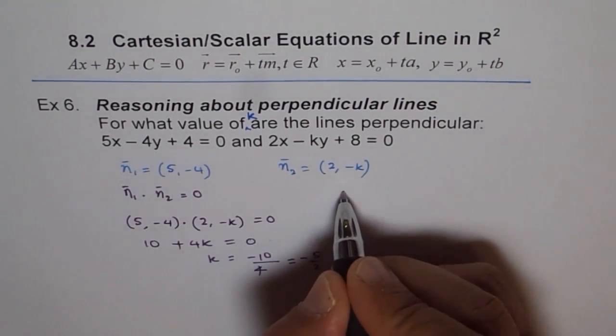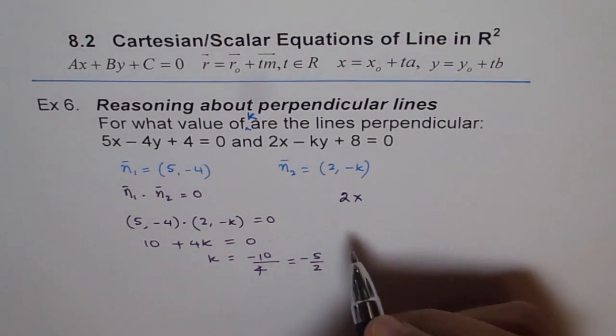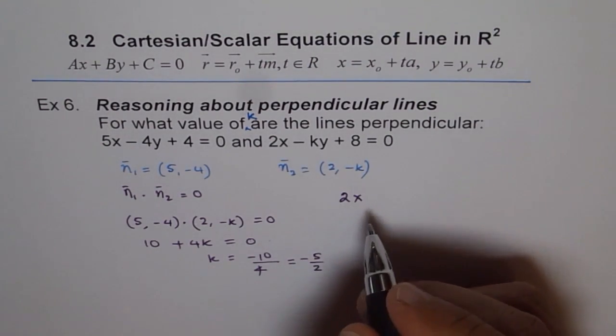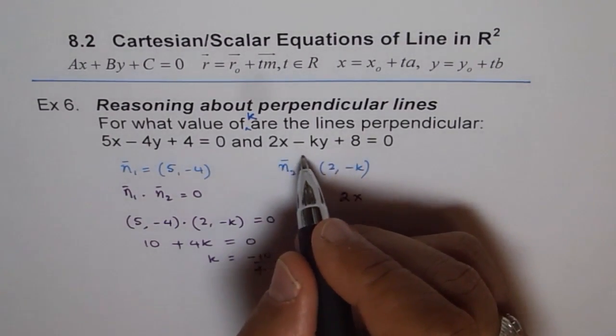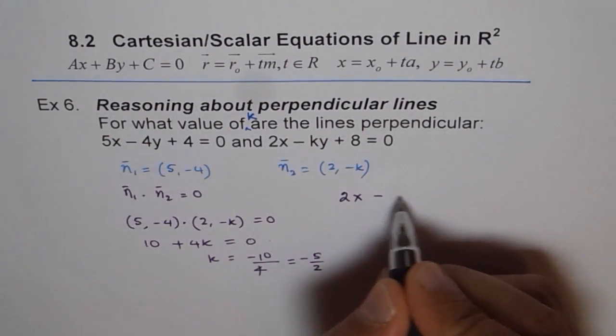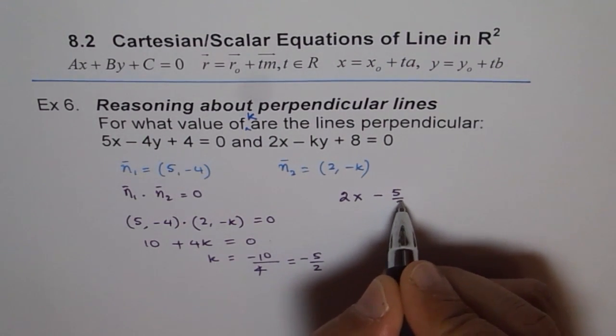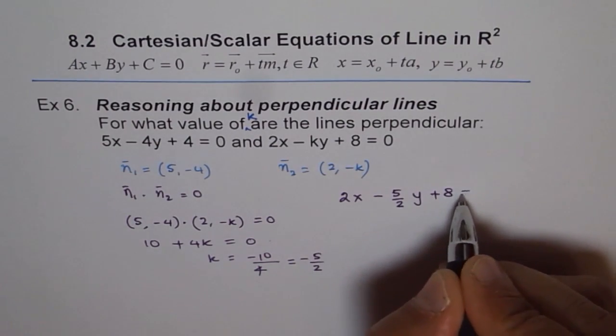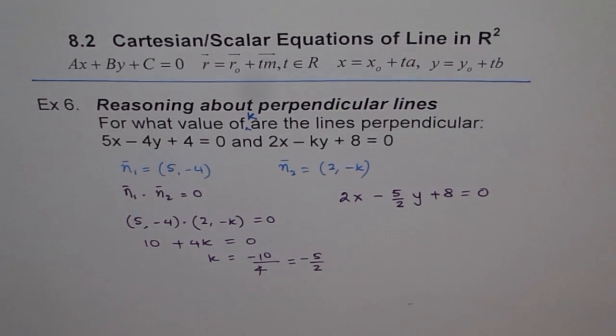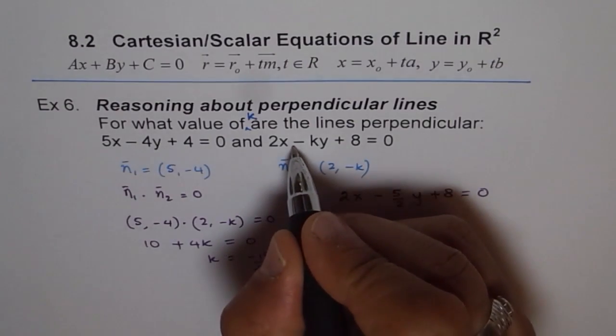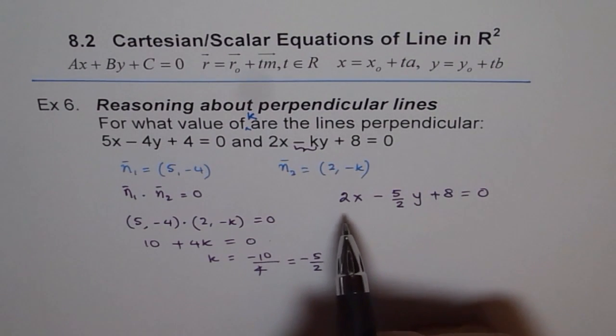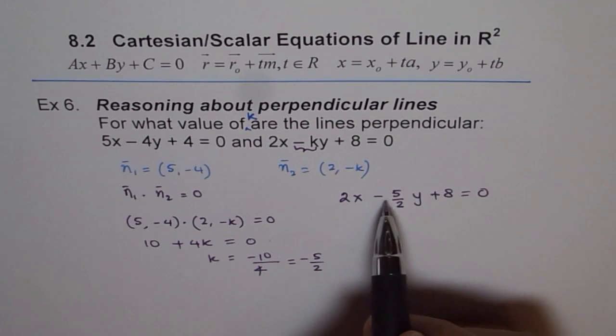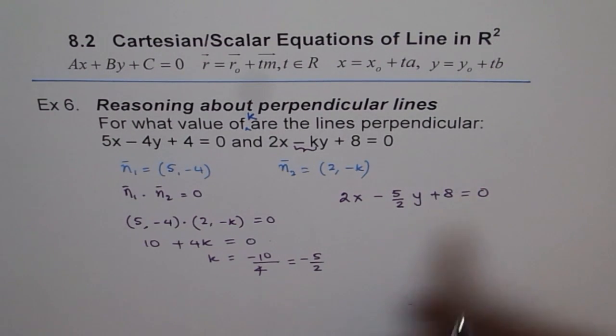And therefore, the equation will be 2x and k is minus 5 over 2. So we are replacing minus k here. So we are separating this as minus 5 over 2y plus 8 equals to 0. Because we took minus k there, we took along with the sign. So we are just putting it along with the sign. So we get our answer as 2x minus 5 over 2y plus 8 equals to 0.